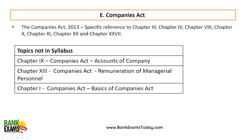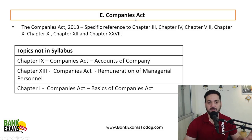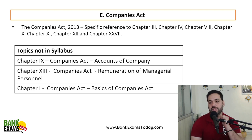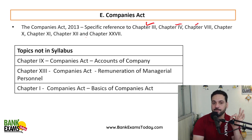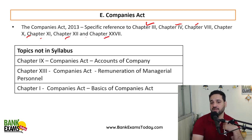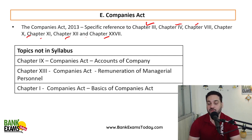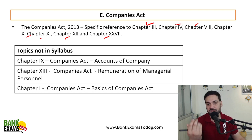For companies act: students, you are not supposed to do the entire companies act as it's a lengthy act. As mentioned in the notification, you are supposed to study chapters 3, 4, 8, 10, 11, 12, and 27. These are the specific chapters required. There are certain lengthy chapters not given in the syllabus, but some students still cover them. Note that there is a difference between the syllabus of phase one and phase two — phase two has more sections, which we will cover.